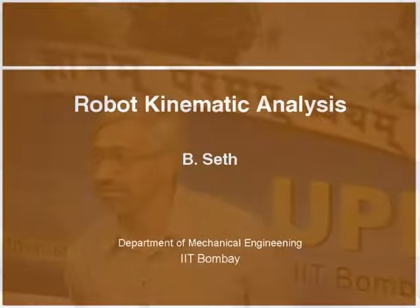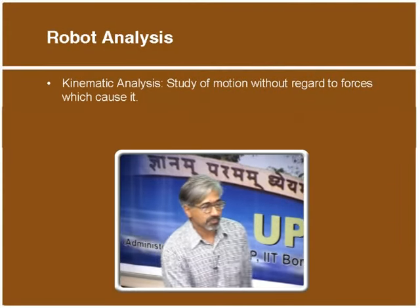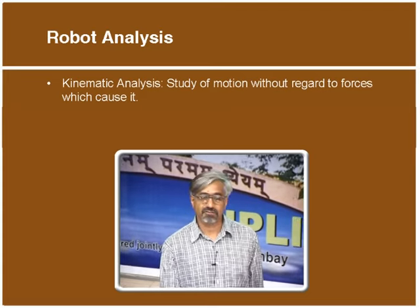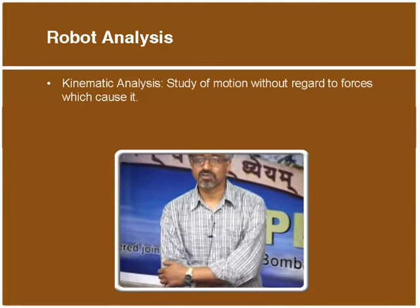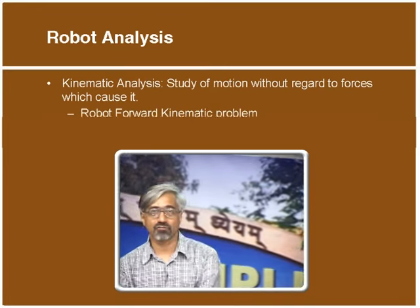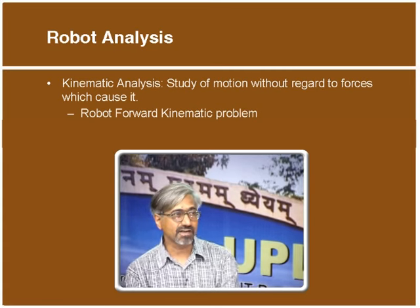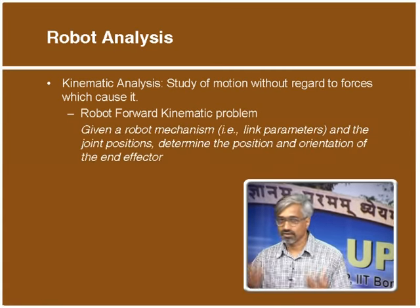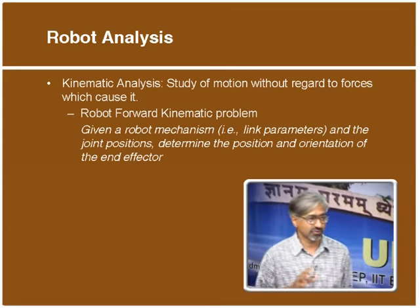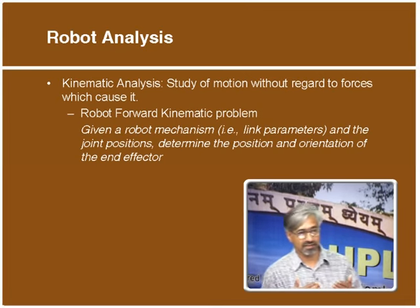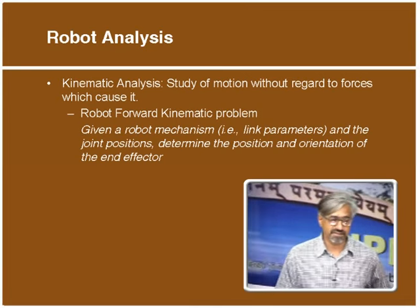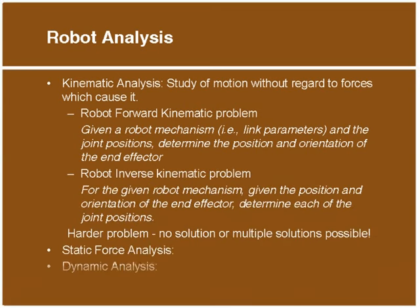I will be speaking about robot kinematic analysis today. Kinematic analysis is basically a study of motion without regard to the forces which cause it. There are two problems encountered in robotics. The first is robot forward kinematics: given a robot mechanism with its joints and links, and you know everything about its geometry, if you are given all the joint positions — joint angles for revolute axes and offset distances for prismatic axes — then we want to find out where the wrist of the robot is. That is called the forward kinematic problem.